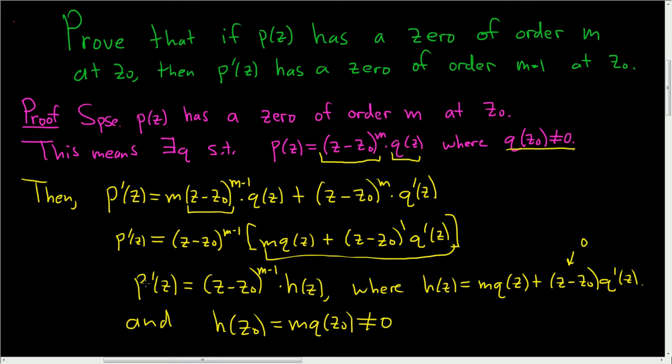So we've shown that p prime of z is equal to z minus z naught to the m minus 1 power times a polynomial function such that h of z naught is not equal to 0. So that's exactly what it means for p prime to have z naught be a zero of order m minus 1.